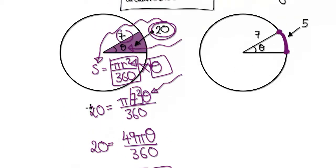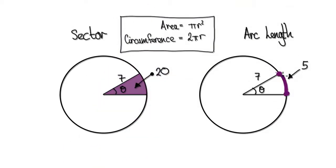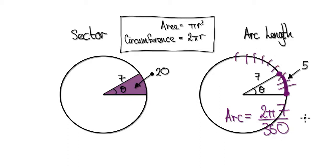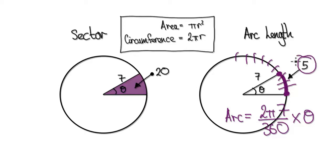Now for the arc length. Here we've got an arc length of 5, so this length here is 5 and the radius is 7. Same idea — use algebra. We know that the arc length equals 2πr, which is 7 here, cut up into 360 equal pieces. And if you get this many pieces times theta, it will give you the arc length. We were told that the arc length is 5, so we can put the 5 in.